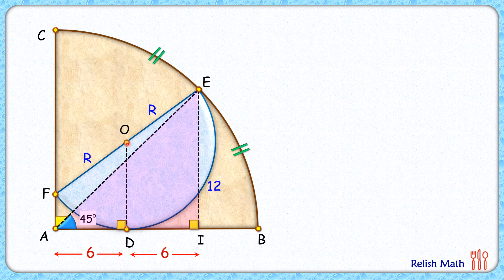Now from point O let's drop a perpendicular on EI. This length OD is the radius of semicircle or R centimeters. Thus GI length will also be R and EG will be 12 minus R. And how about OG length? OG will be the same as DI length or 6 centimeters.